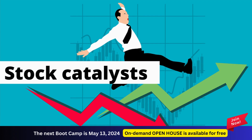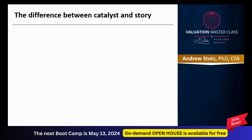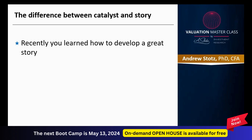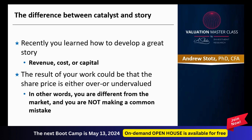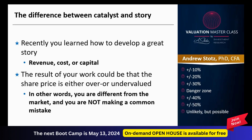Let's get on to the topic for tonight, which is stock catalysts. The difference between a catalyst and a story is that you've recently learned to develop a good story — like revenue, cost, or capital — and the result of your work could be that the stock price is either overvalued or undervalued. If you're 10 plus or minus in your target price, 20 or 30, that's fine, but once you go above there you get into a danger zone of minus 40 or plus or minus 50.